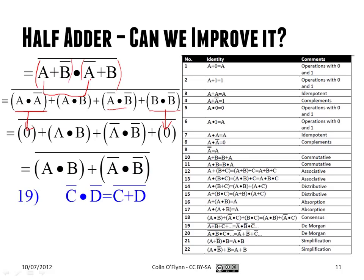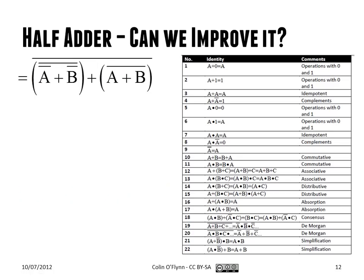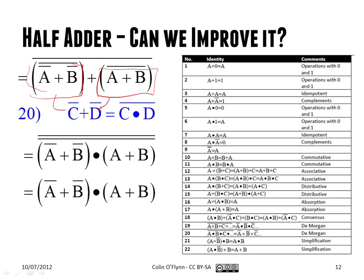We once more apply De Morgan's — notice the trend of lots of application of it. We apply it within each individual literal, converting the two terms. Then once more we apply De Morgan's to the entire thing, considering each part as one literal C and one literal D. Because we already had the inversion over the whole thing, we end up with a double inversion, which cancels, leaving us with the simplified form.